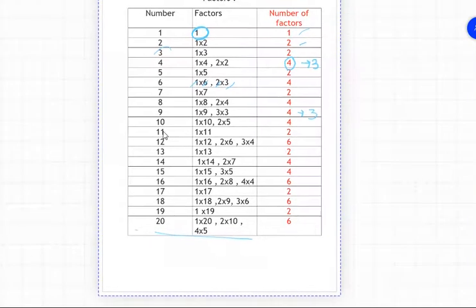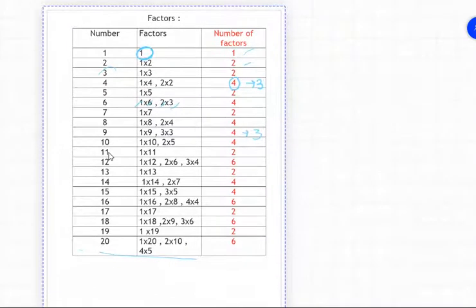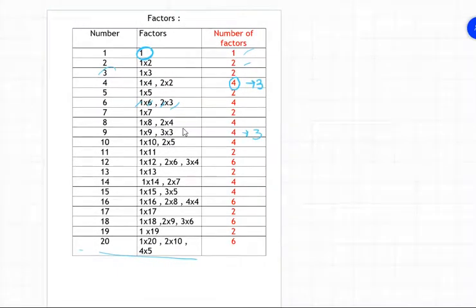Where we have similar numbers, we'll take it as one factor. Ten has four factors. Eleven has two factors. Twelve has six. Thirteen has two. Fourteen, fifteen - now you are able to count the number of factors.